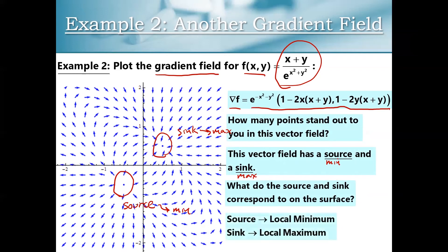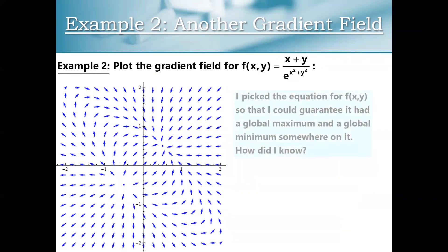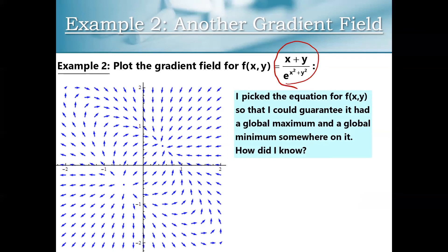We don't know if it's going to be local or global, so we call it a local min and a local max, because following these trajectories doesn't give you any guarantees about getting to the highest point overall — we just know that locally we're going to a highest point, or the gradient is moving away from a lowest point. I engineered this problem to have a global max and a global min, and this is the sort of analysis of the equation for a function that you should be able to do to eyeball the equation and say there's going to be a global max and a global min.